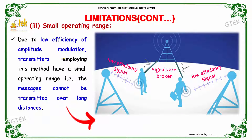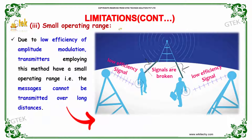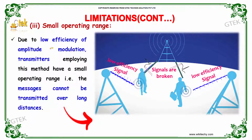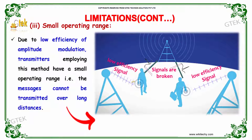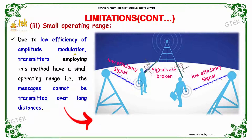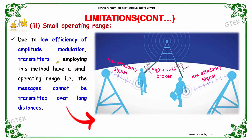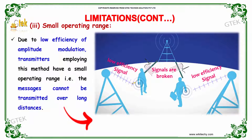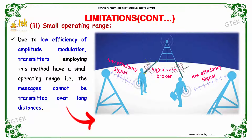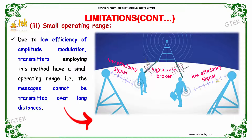Small operating range adds one of the major limitations. Due to low efficiency signal and low efficiency of amplitude modulation transmitters employing this method, there is a small operating range — the messages cannot be transmitted over a very long distance.